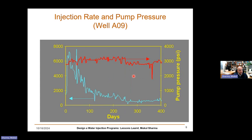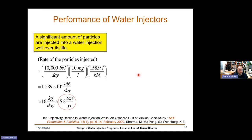Another well, WLA09, showed the same pattern — injection rates drop off fairly quickly with a half-life of three to four months. Really, what turned out to be the explanation was something we should have probably foreseen, but nobody knew at the time. This is all published in SPE Production and Facilities in 2000 — the offshore Gulf of Mexico case study we published with Shell.